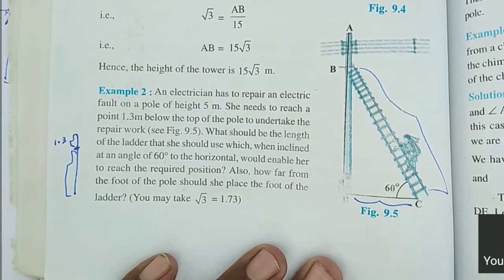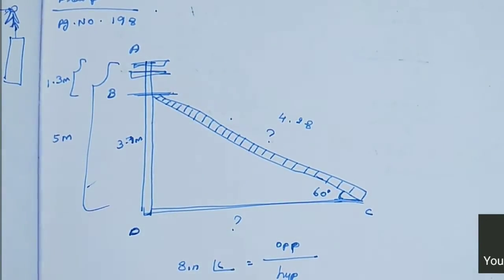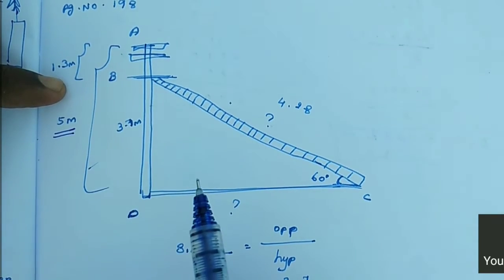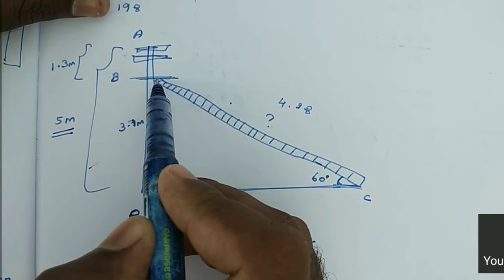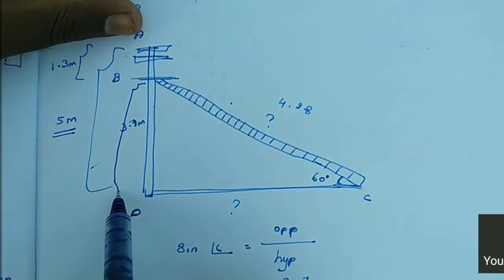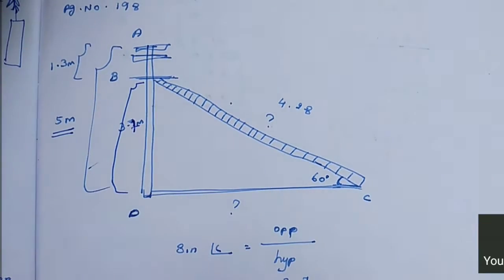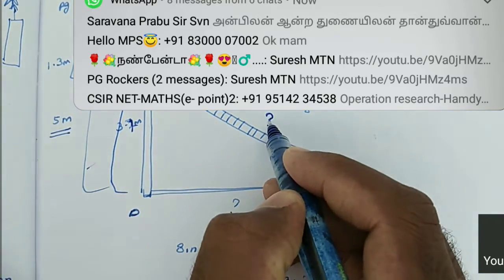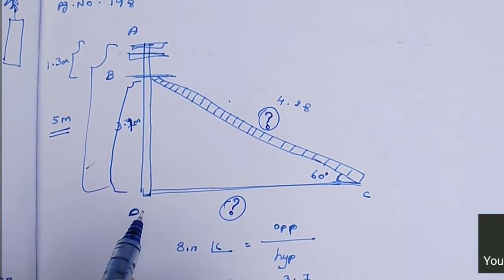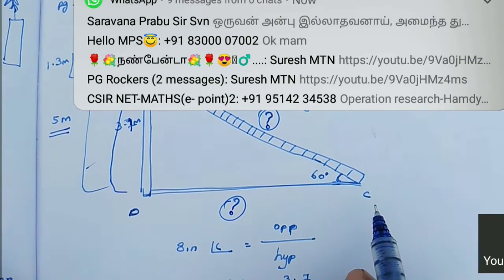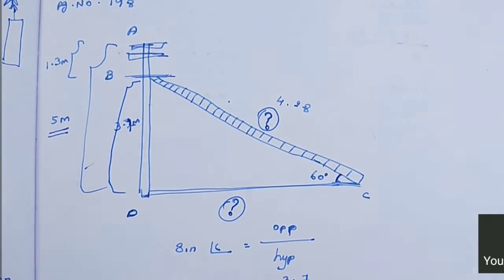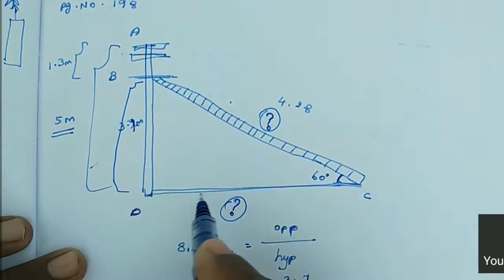Here they are asking two measures: the height of the ladder as well as the distance between the foot of the ladder and the electric pole. Now we can represent the problem in a diagram. In this problem, they are given the height of the electric pole — totally it is 5 meters. She wants to stand here to repair the electric pole, that is 1.3 meters below the 5 meter electric pole. So the height she stands at is 3.7 meters. The angle of elevation is 60 degrees. We consider this as a right angle triangle — 3.7 meters here, 60 degrees here.